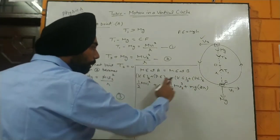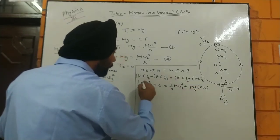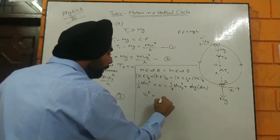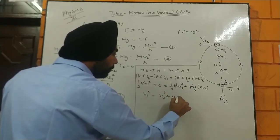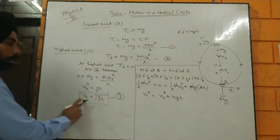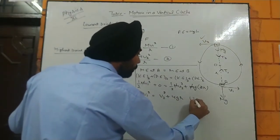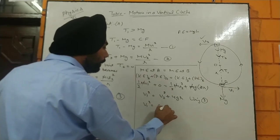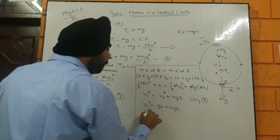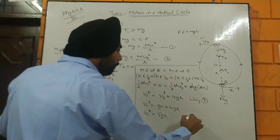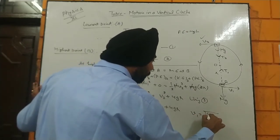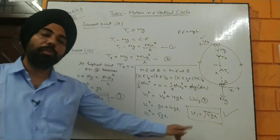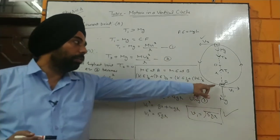Cancelling m from both sides and multiplying through by 2, we get v1 squared equals v2 squared plus 4gr. Substituting the value of v2 squared from Equation 3, which is gr, we get v1 squared equals gr plus 4gr, which gives v1 squared equals 5gr. Therefore v1 equals square root of 5gr. That is the required formula for the velocity at the lowest point of the vertical circle.